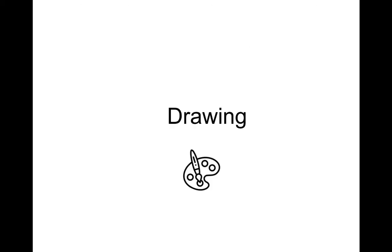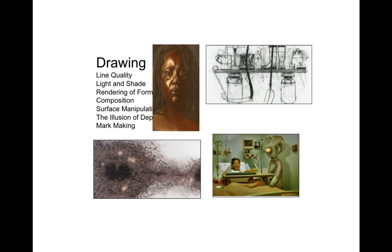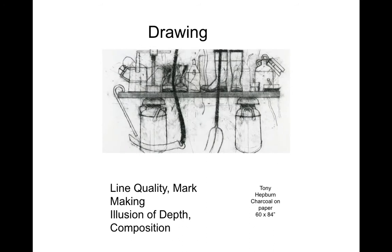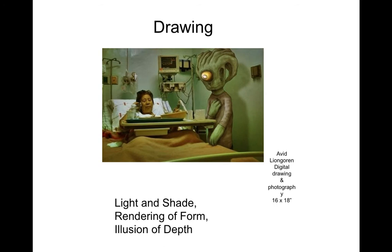Throughout the portfolio, one piece kind of leads itself to another. A drawing portfolio consists of elements like line quality, light and shading, rendering, form, composition, surface manipulation, illusion of depth, and mark making. It really focuses on the manipulation of the surface and working with line and shade. We can also incorporate things like digital drawing or photography as part of a drawing portfolio, which used to not be the case, but with the new additions around experimentation and exploration within the portfolio, we can now do a bit more.